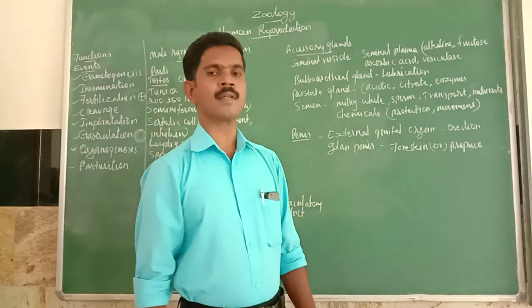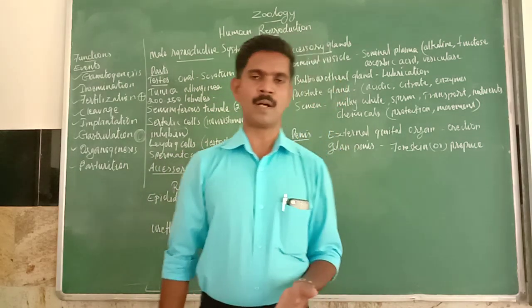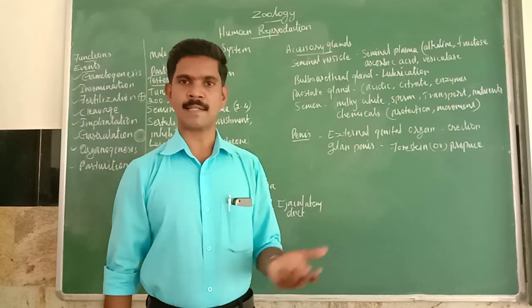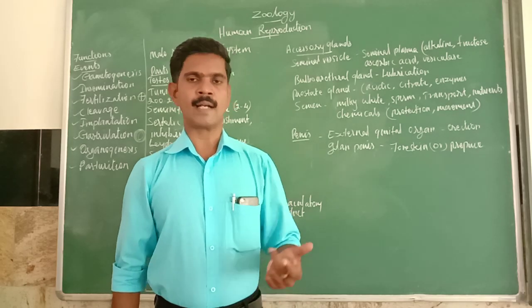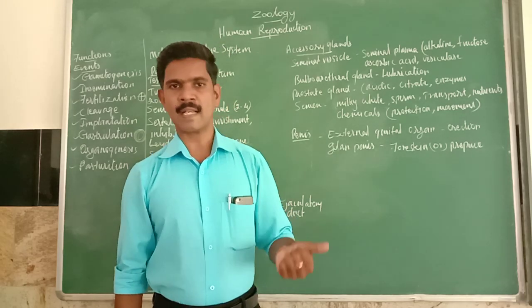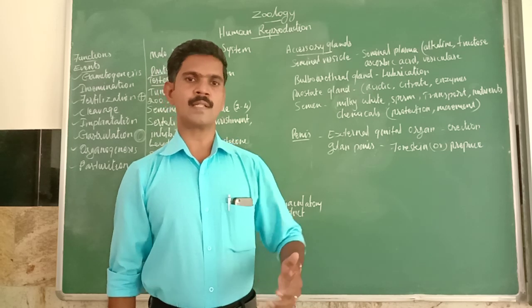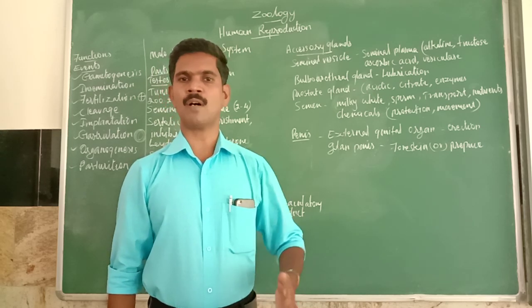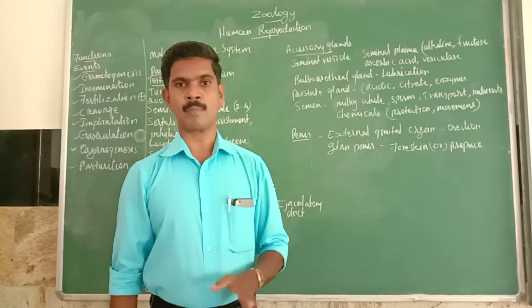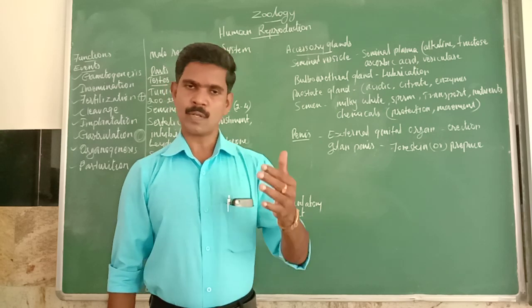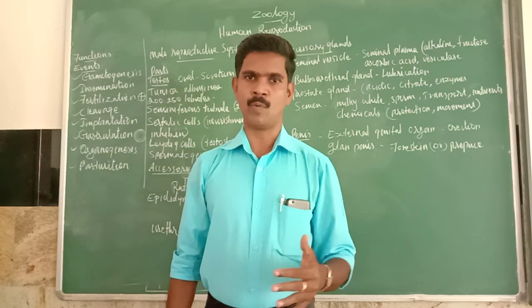The male reproductive system is made up of many parts: a pair of testes, accessory ducts, accessory glands, and external genital organs. These are the common parts of the male reproductive system. Now we are going to study about all these parts one by one.